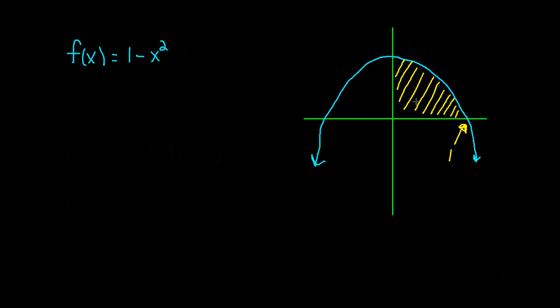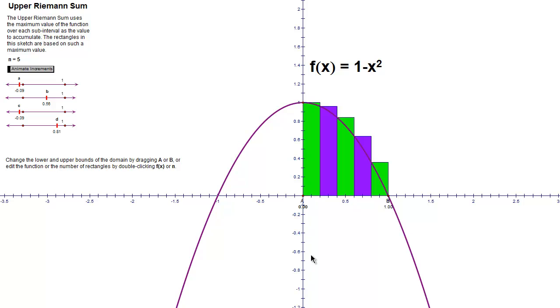so how could we estimate that area? Well, one way to do that is to build some rectangles. And I have a little bit better picture here of the exact same function. And you can see that I built 5 rectangles. Now, you can see that these rectangles kind of are a little bit bigger than the area that I'm interested in, which is why we call it an upper Riemann sum.